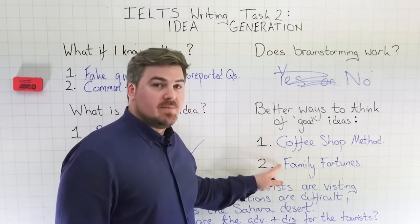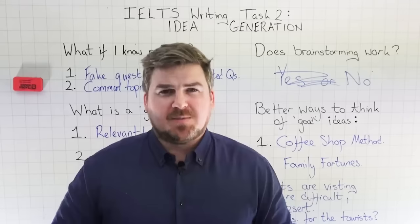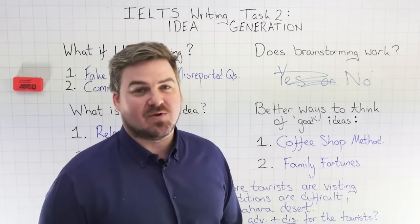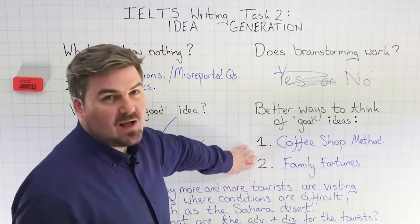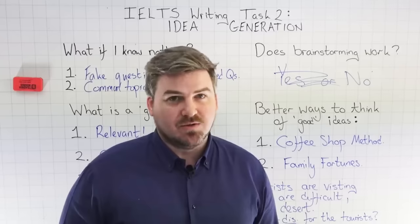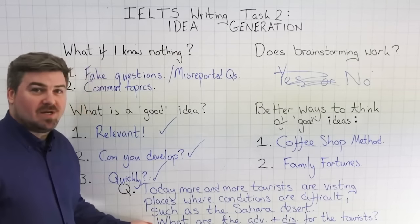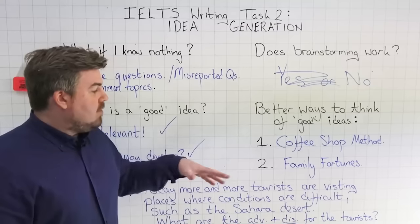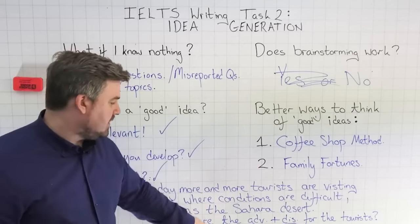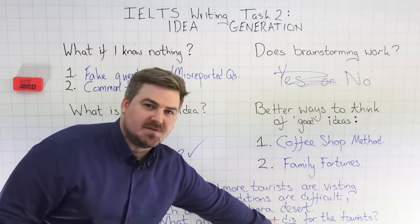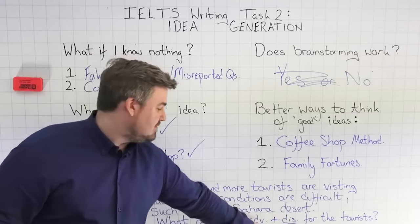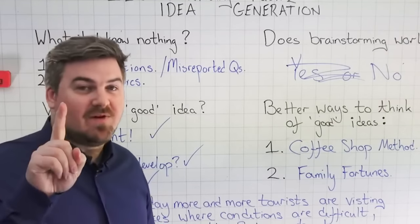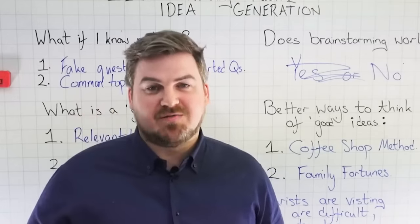Some people like the coffee shop method, some people like the Family Fortunes method. There are many other techniques I teach, but hopefully that will help you generate ideas. So now I'd like you to look at this question, pick one of these techniques — either imagine you're in a coffee shop discussing it with a friend, or think what would be the most common advantage and the top answer for disadvantage — and simplify it: what's a good thing about it? What's not such a good thing? Keep it simple. Let me know one advantage and one disadvantage in the comments, and you will surprise yourself just how easy this is.